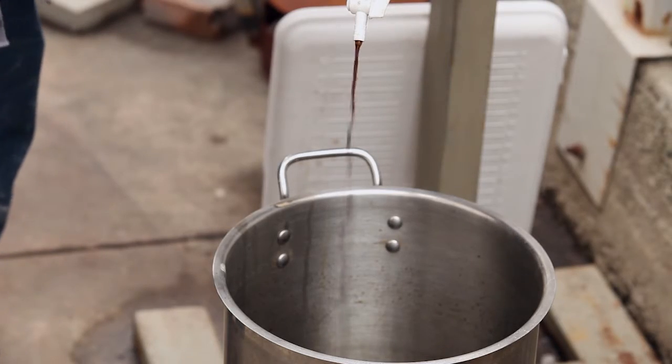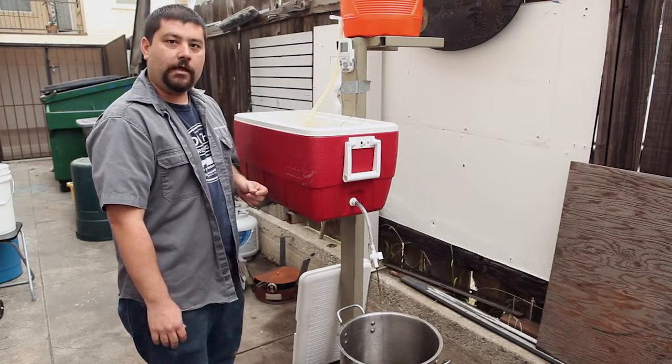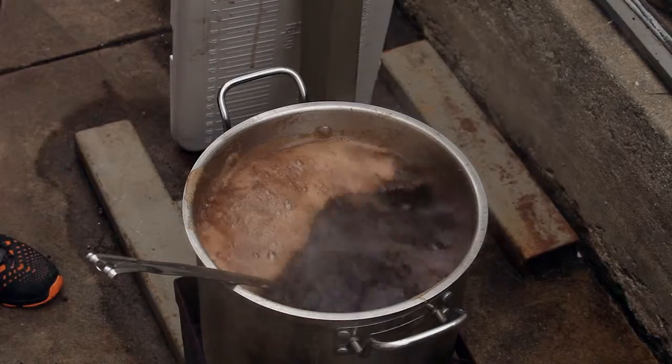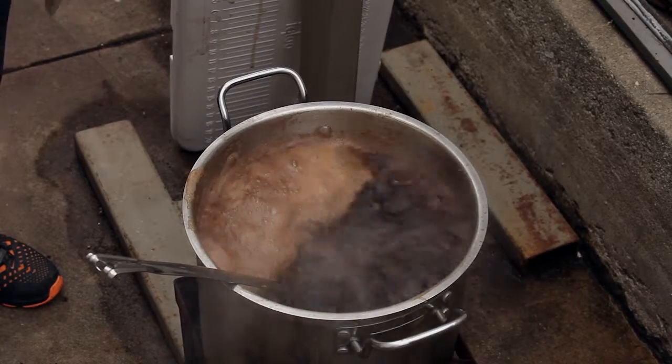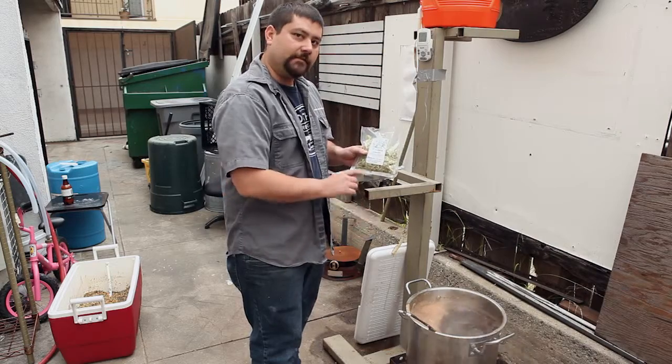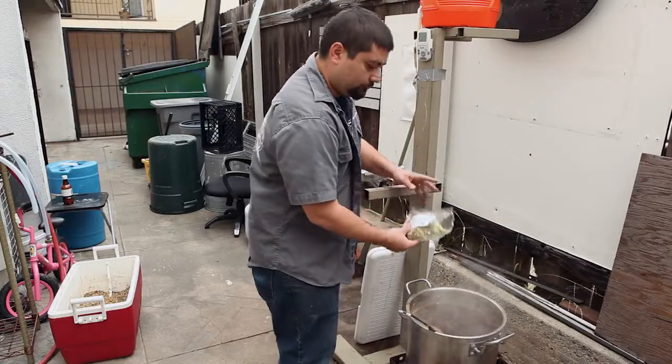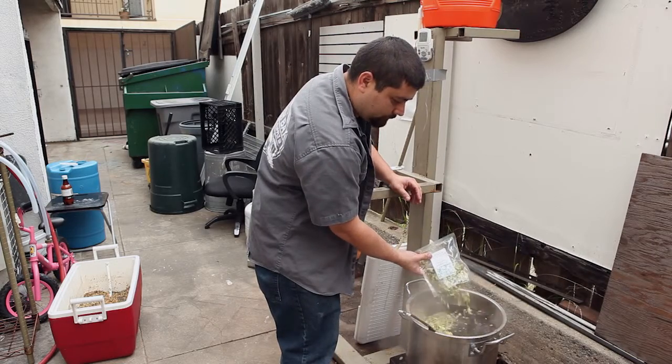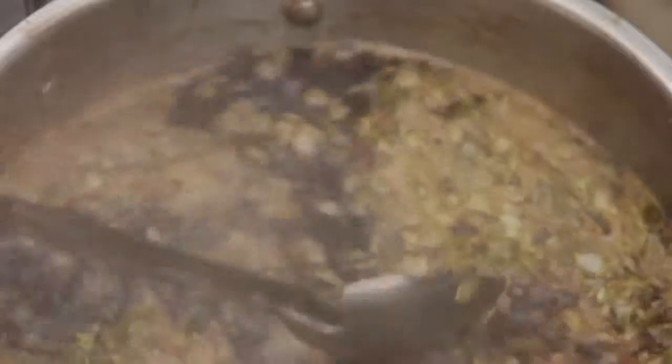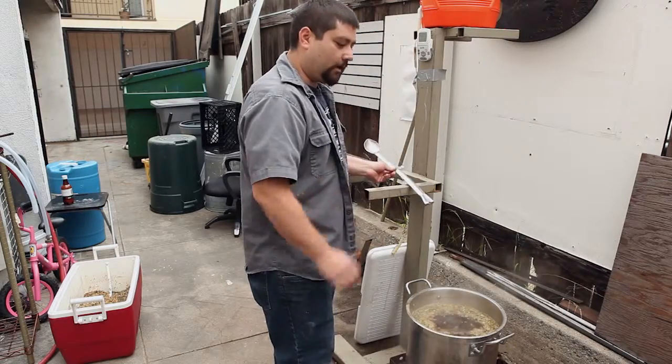After we collect all of our wort, we will start our boil and add our hops and boil for an hour. Our wort is up to a boil now, it's a rolling boil. We're going to add our hops at this time and start our timer for one hour. We're going to be using Willamette today, probably about one ounce of whole hops. We've added our hops and everything's mixed in and we are going to start our timer for one hour.